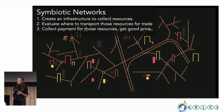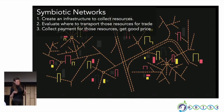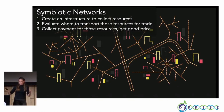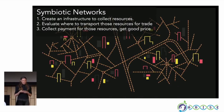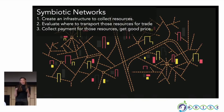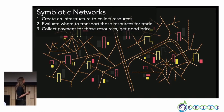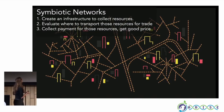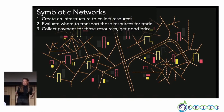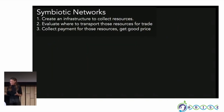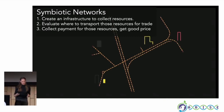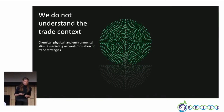First, the fungal network has to create an infrastructure — it has to build the physical structure to go out into the soil and collect resources. Next, it has to evaluate where to actually transport those resources for trade. And then it has to collect payment for those resources and get a good price. These are all the types of strategies we are focused on understanding.